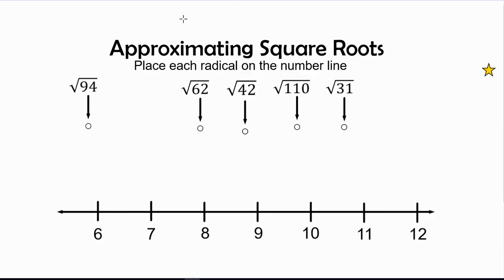I'm gonna look at that. We need to find out what perfect squares are before radical 94 and after radical 94. So we're gonna say to ourselves, I can see that 94 is close to 100 and I know that radical 100 equals 10.